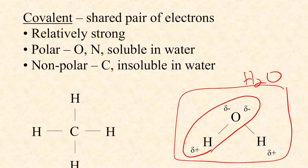Even though hydrogen and oxygen are sharing a pair of electrons, which stabilizes them both, the electrons are spending more time around the oxygen than around the hydrogen. So what we end up with is a partial negative charge around the oxygen and a partial positive charge around the hydrogen atom. This is what we call a polar covalent bond.